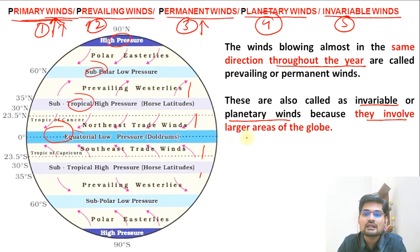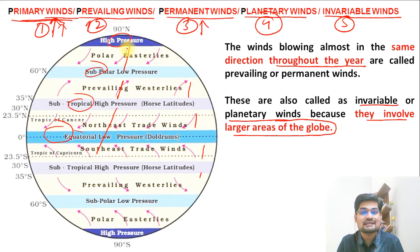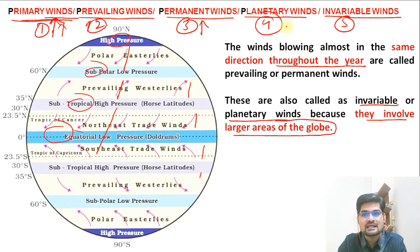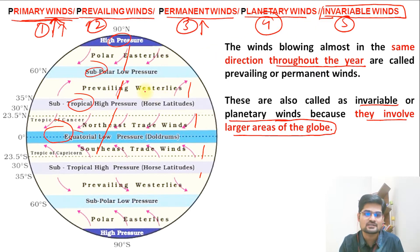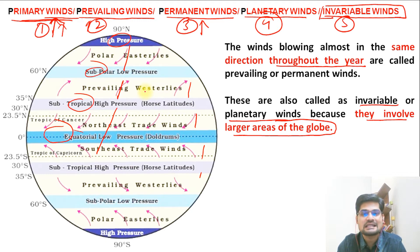They are called invariable because their direction is almost fixed throughout the year, across the globe, across the pressure belts — they do not vary. That is the reason they are known as invariable winds. So let's learn about these primary, permanent, planetary, invariable winds in detail today.